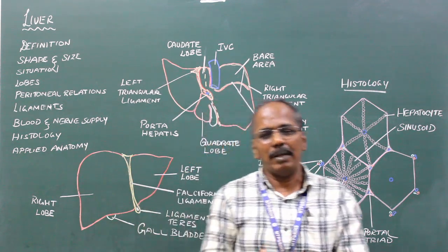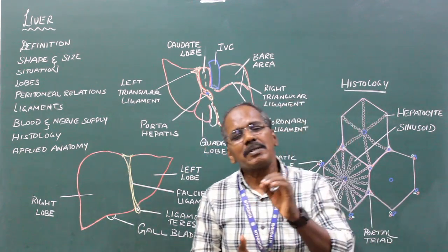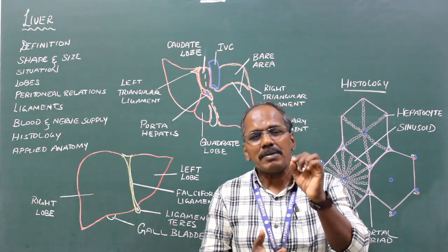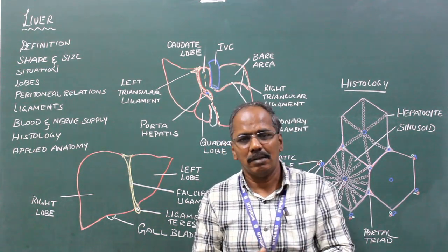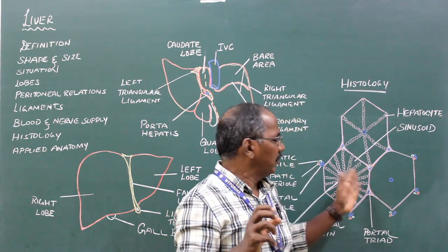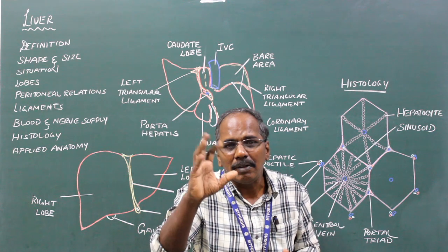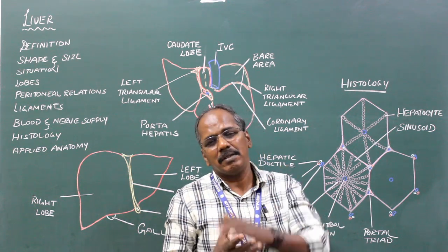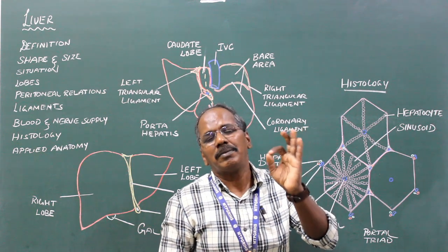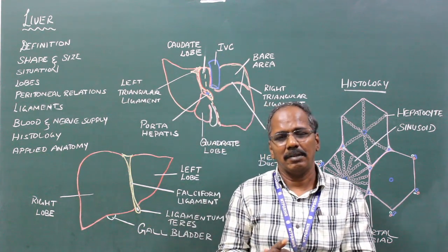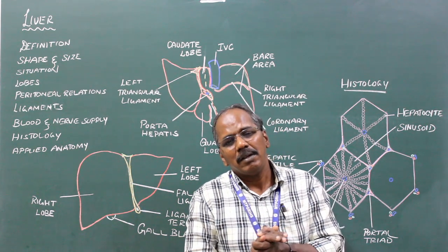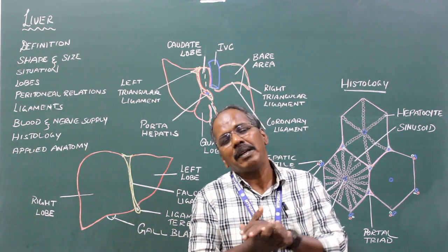Applied anatomy — cirrhosis of liver. Cirrhosis of liver is due to atrophy of the parenchyma of the liver and hypertrophy of the connective tissue in chronic alcoholic persons. In this condition, portal hypertension is a common finding.